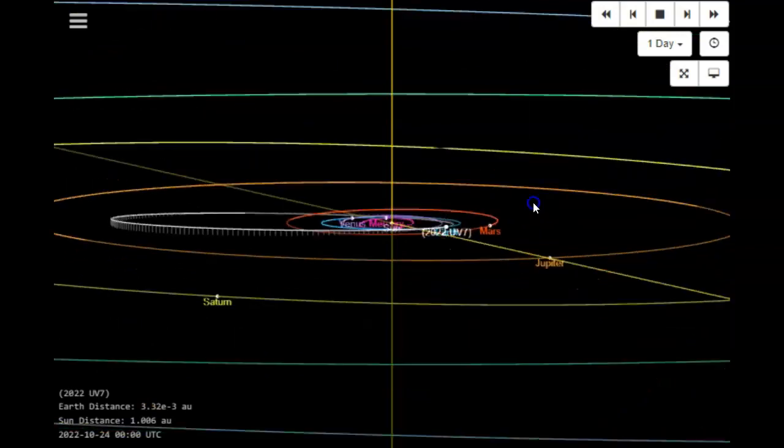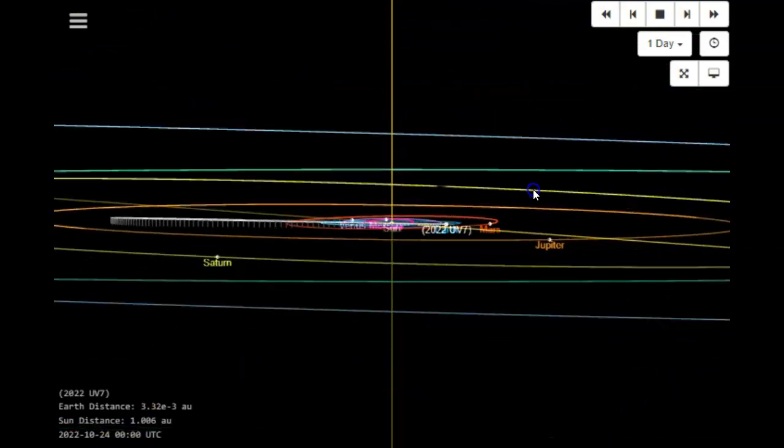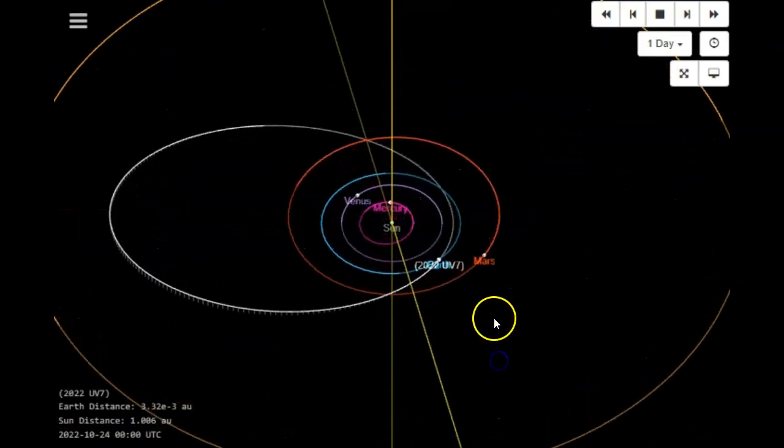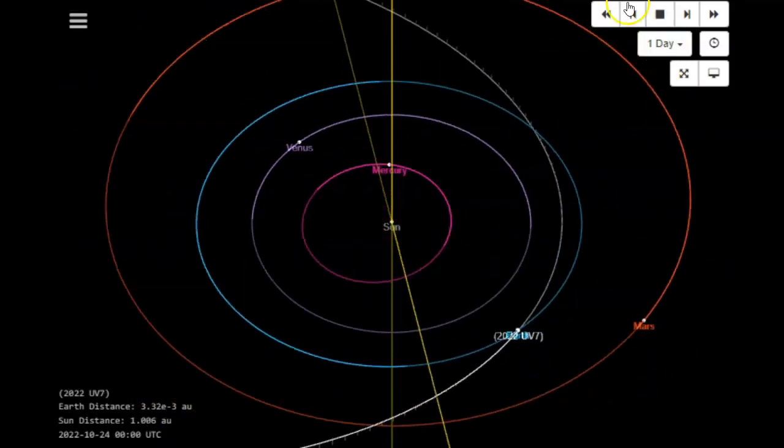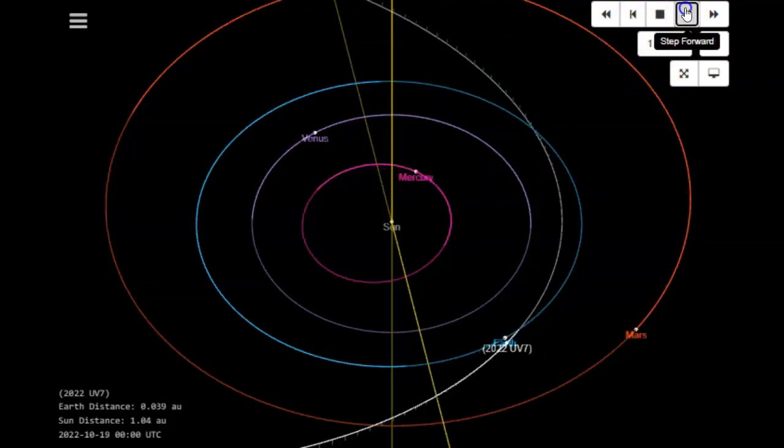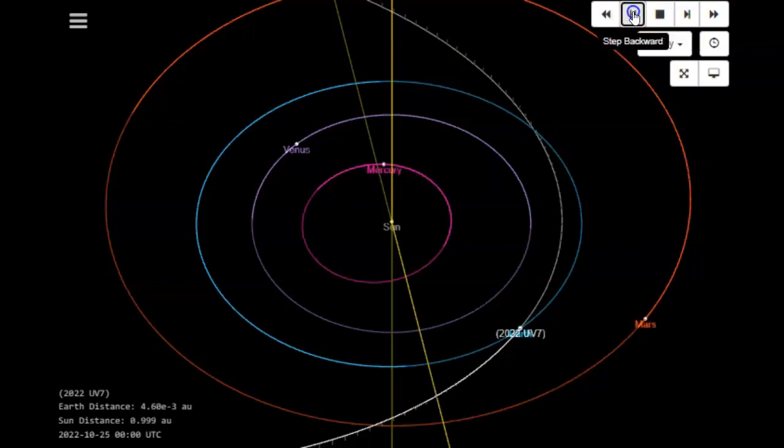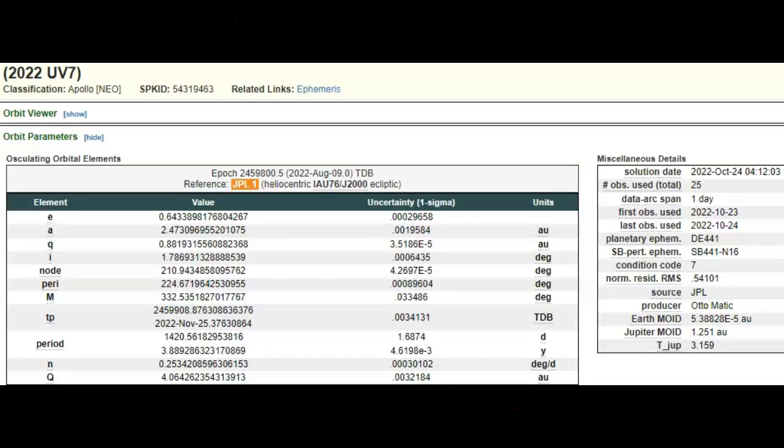And it doesn't have the inclination that the first rock had. It's much more on the exact plane, as you can see, that planet Earth is on. When we zoom in, you can see that tonight's the night. We'll see when they actually found it, but you can see it inbound. And then watch your dates over on the left here. Right there is the 24th. They're expecting it today or tonight. So here we go, 2022 UV-7.